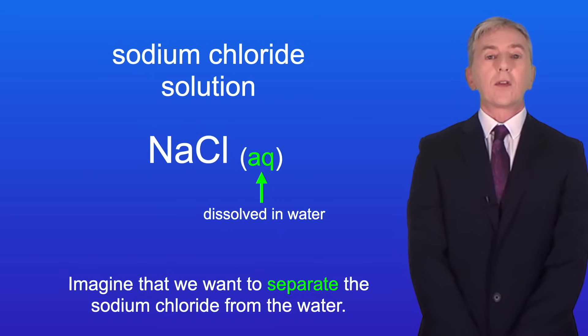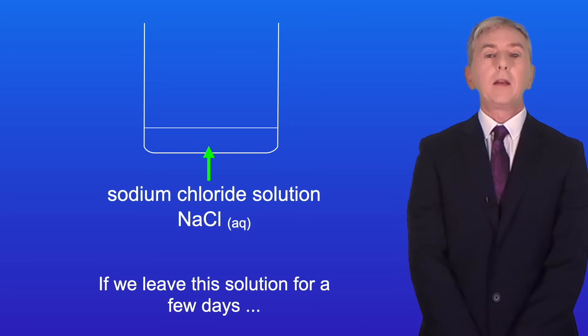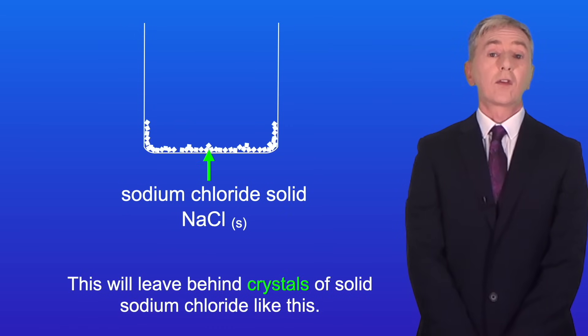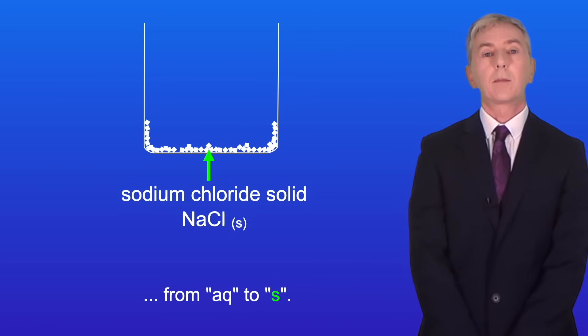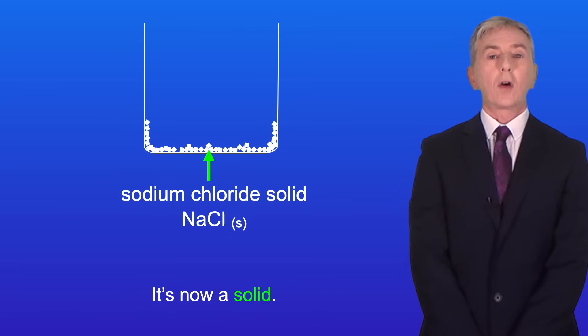Imagine that we want to separate the sodium chloride from the water. So here's our sodium chloride solution. Now if we leave this solution for a few days then the water will evaporate and this will leave behind crystals of solid sodium chloride like this. You can see that I've changed this state symbol for the sodium chloride from Aq to S. That's because the sodium chloride is no longer dissolved in water. It's now a solid.